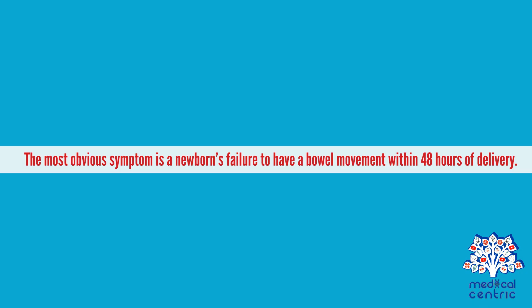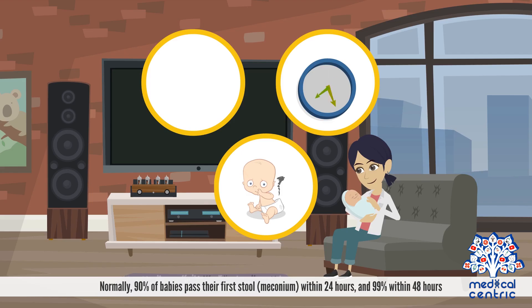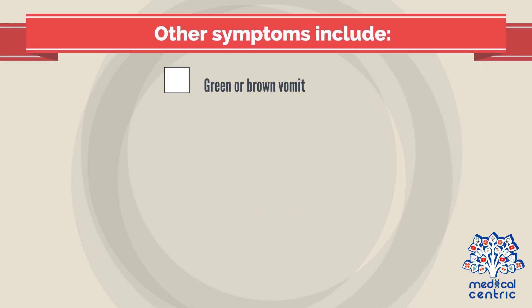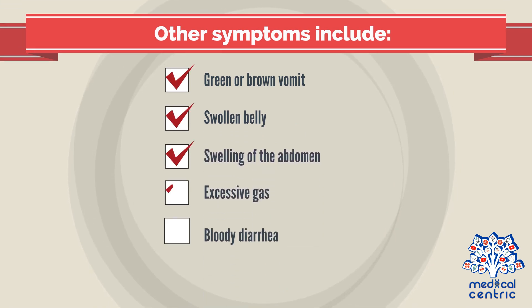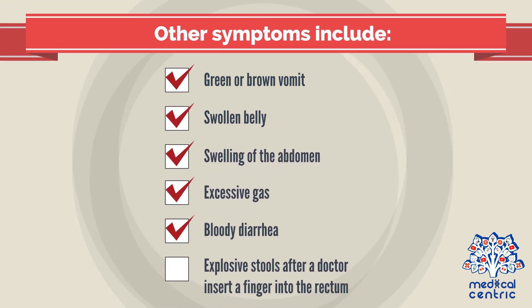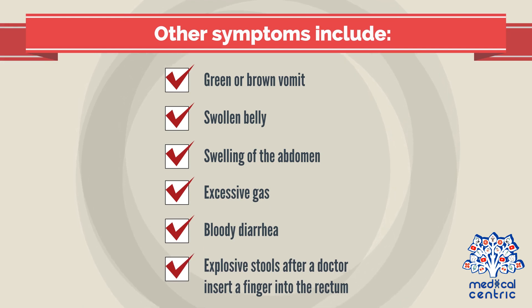Symptoms: The most obvious symptom is a newborn's failure to have a bowel movement within 48 hours of delivery. Normally, 90% of babies pass their first stool, or meconium, within 24 hours and 99% within 48 hours. Other symptoms include green or brown vomit, swollen belly, swelling of the abdomen, excessive gas, bloody diarrhea, and explosive stools after a doctor inserts a finger into the rectum.